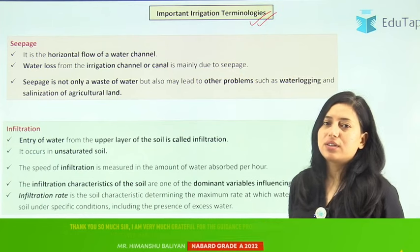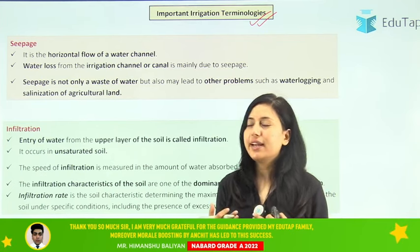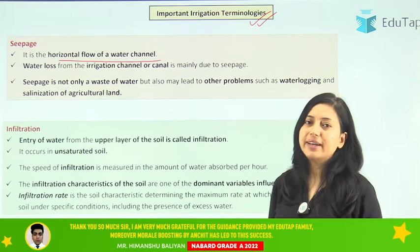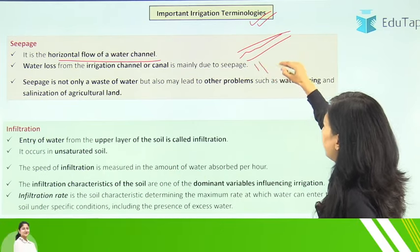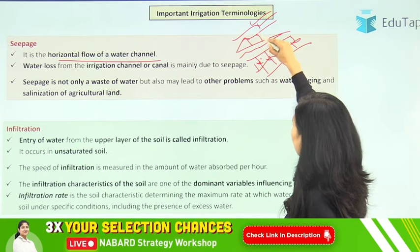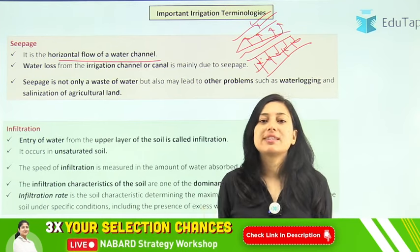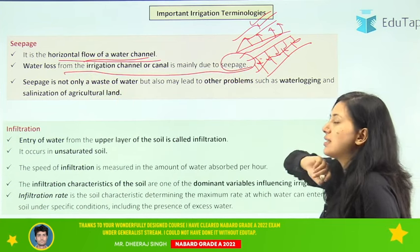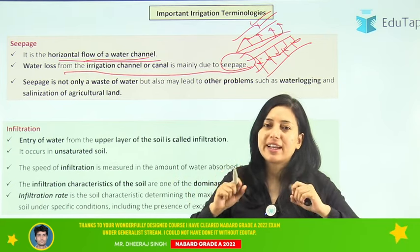Now we are discussing important terminology related to irrigation. First is seepage — seepage is basically the horizontal flow of water from a canal. What happens is that sometimes we have a water channel or canal with water flowing through it, and the water horizontally seeps out from this canal. So this horizontal flow of water from a water channel or canal is known as seepage. Water losses from irrigation channels or canals are mainly due to seepage.